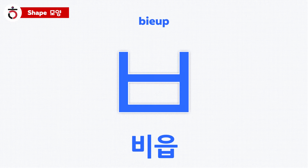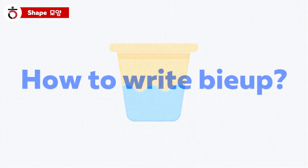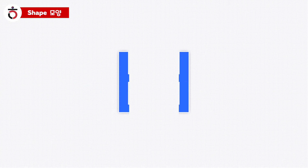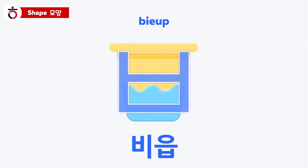This is the character 비읍. 비읍 is very similar to a bucket — a bucket with water in it. And how to write it? There are four strokes. Draw two vertical lines first, then write two horizontal lines in between them. 비읍. It looks like a bucket.